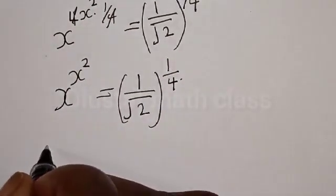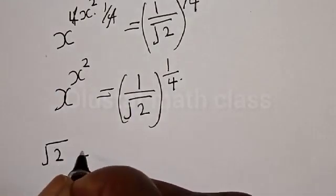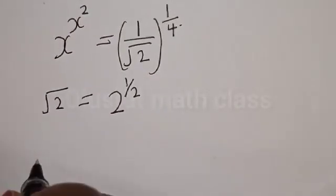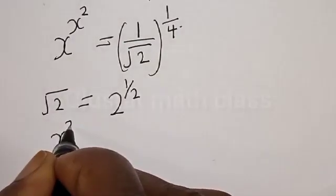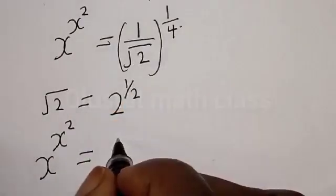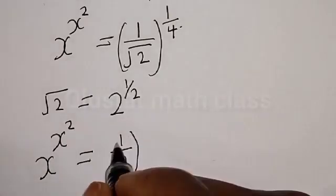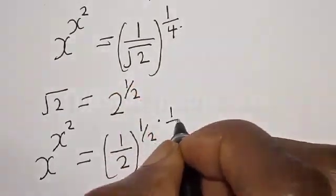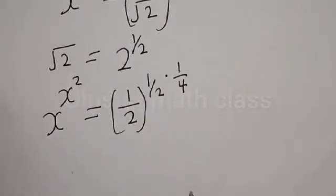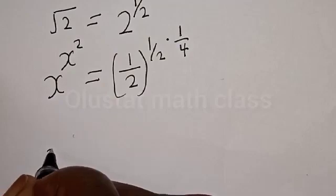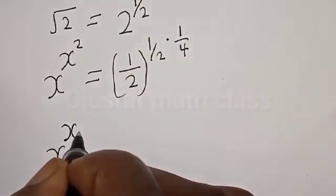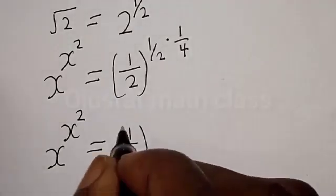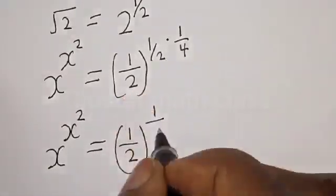Now, remember that square root of 2 is the same thing as 2 raised to the power 1 divided by 2, that is one half. Then we have x raised to the power x squared is equal to 1 divided by 2 raised to the power 1 over 2, then multiply by 1 over 4. So we have x raised to the power x squared equal to 1 divided by 2 raised to the power of 1 divided by 8.